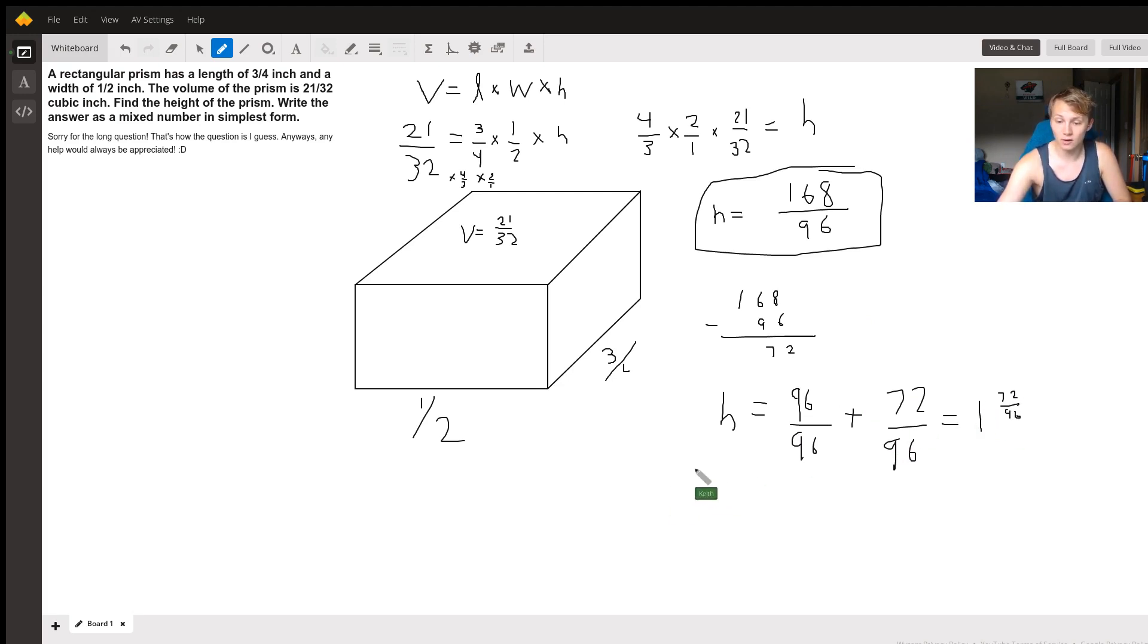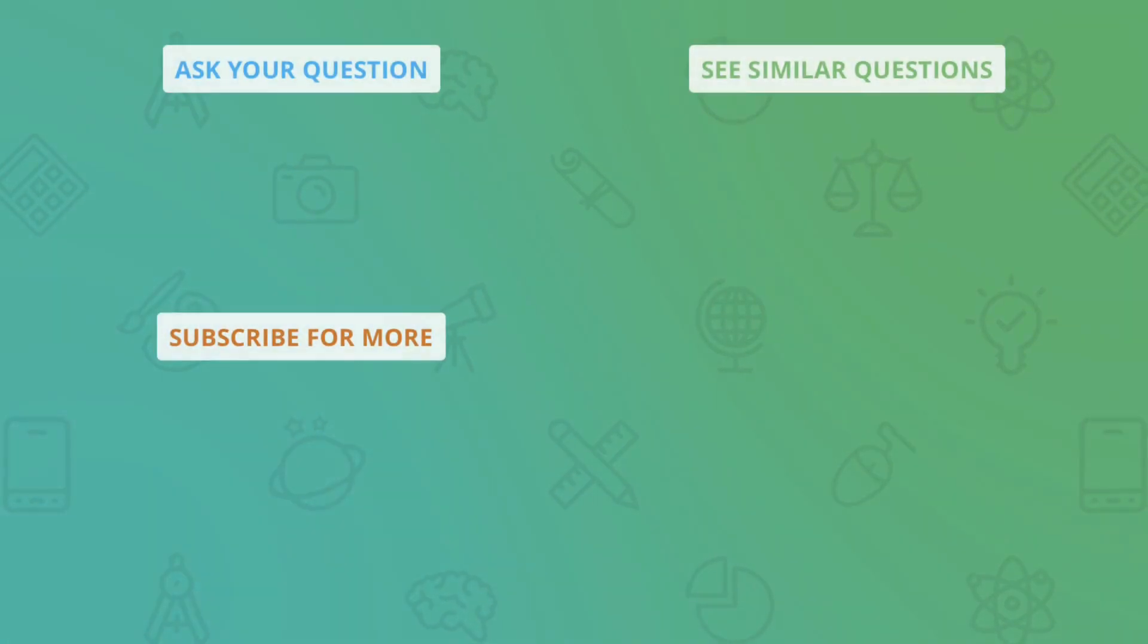And now we just need to simplify this down a little bit more. Both of these numbers are divisible by 24, so our final answer is 1 and 3 quarters, and that is your final answer.